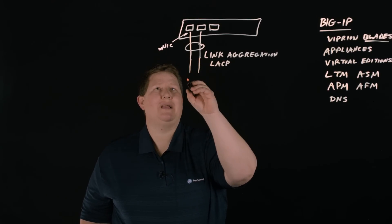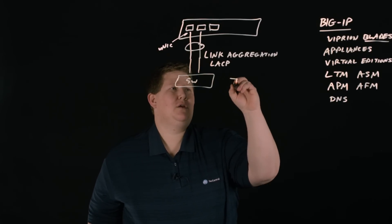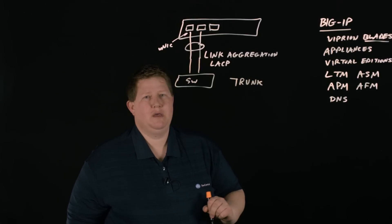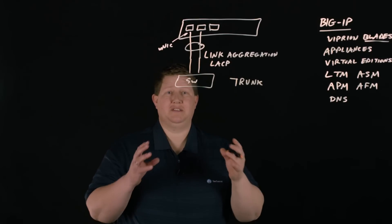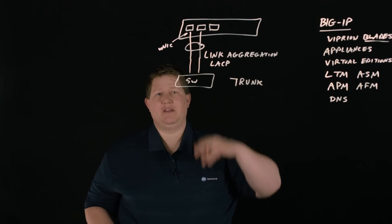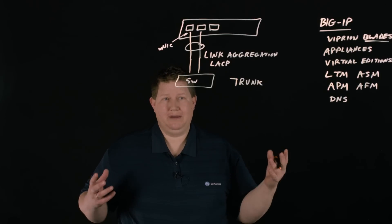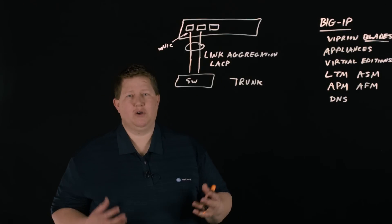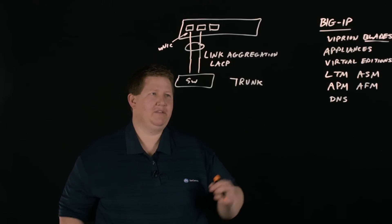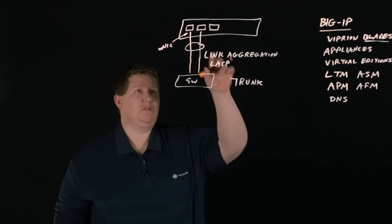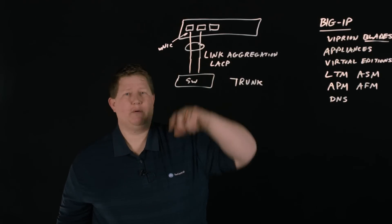When you're actually configuring this in the Big IP — say this is going to a switch — you're going to configure a trunk. That trunk will be any number of network interfaces bundled together. So if you're on an appliance that only has one-gig NICs and you need four gigs, then you would bundle four or eight depending on how much overhead or extra bandwidth you want to plan for spikes. You define a trunk on the Big IP and bundle those network interfaces together.